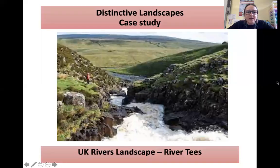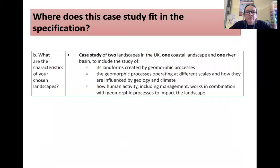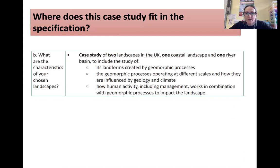Hello geographers. Today's case study is the River Tees, an example of a UK river landscape for OCR B Geography for Inquiring Minds. It fits into the specification as a case study of one river basin to look at the processes and how they're influenced by geology, climate, and human activity management, and how that works in combination with those processes to impact on the landscape.